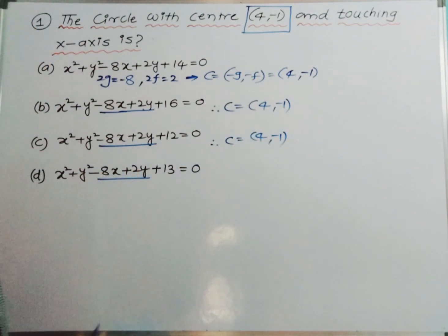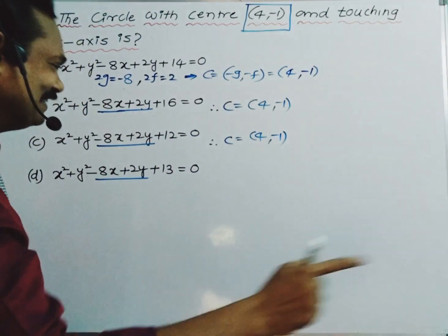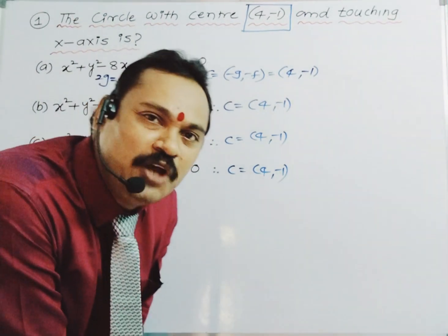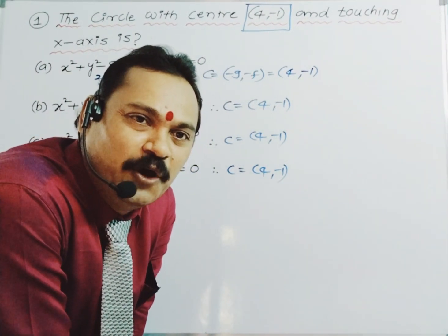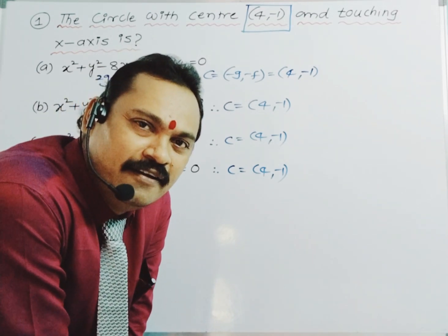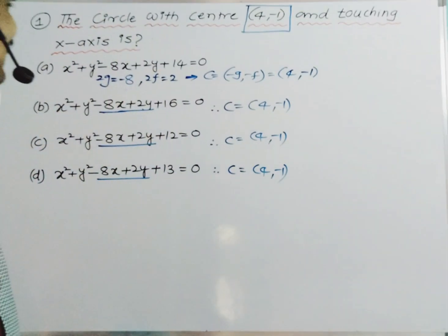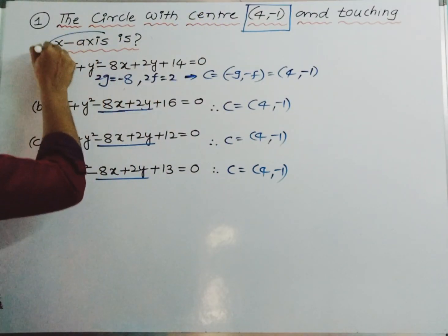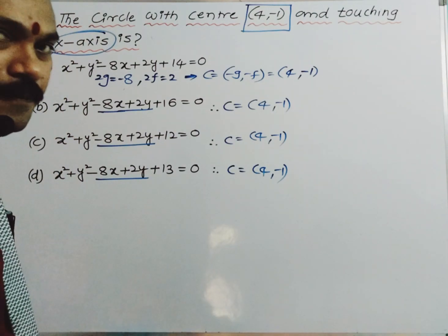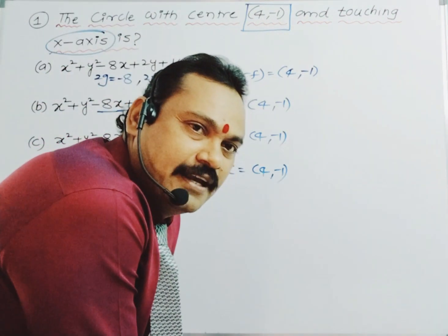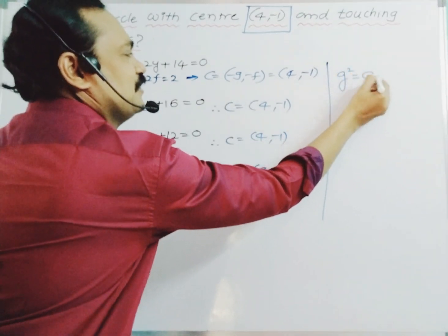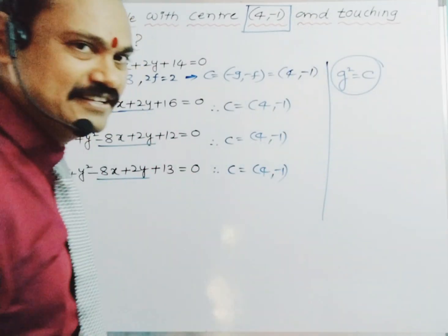The fourth option also contains the same center, C equals (4, -1). All four options are satisfying the center as (4, -1). So there is one more important point — our circle is touching the x-axis. What is the condition if a circle touches the x-axis? That is g² equals c. Simply check g² equals c.